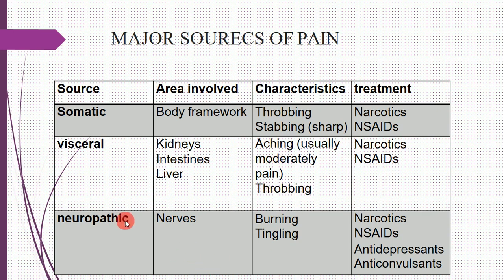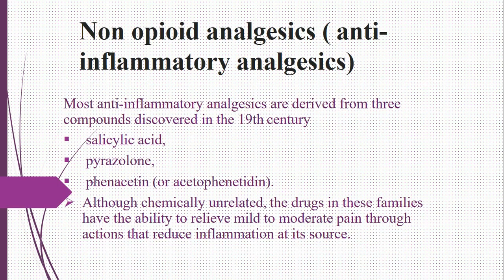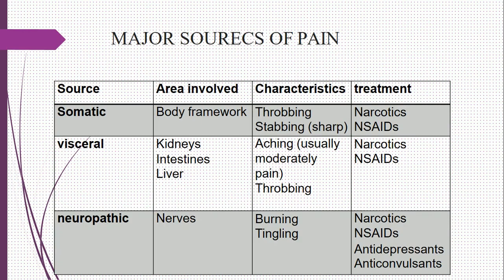Neuropathic pain involves the nerves — for example, sciatic nerve pain. Its characteristics include burning sensation and tingling pain. Treatment includes narcotics, NSAIDs, antidepressants, or anticonvulsants. Non-opioid analgesics and anti-inflammatory analgesics will be discussed in the next lecture. Thank you for watching.